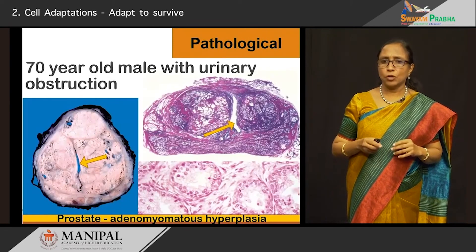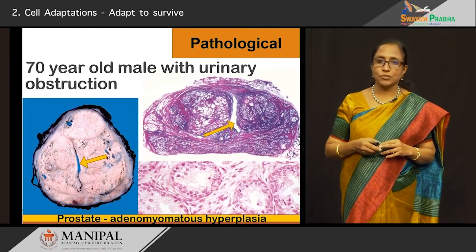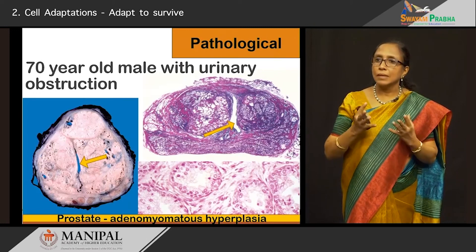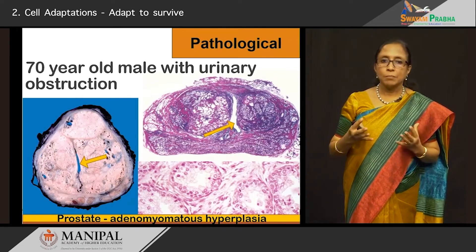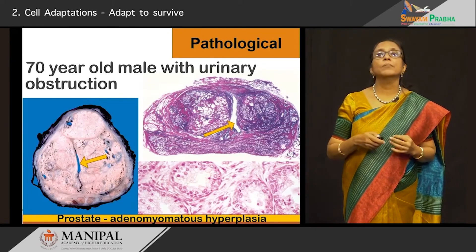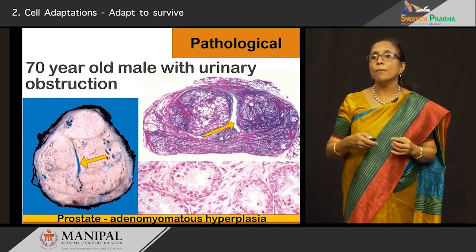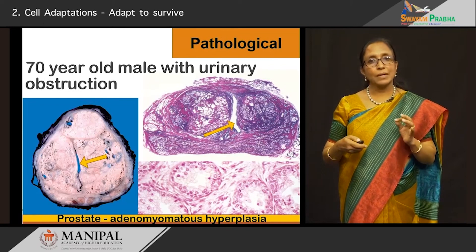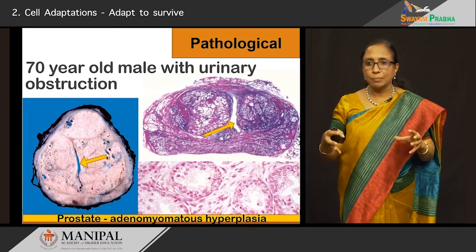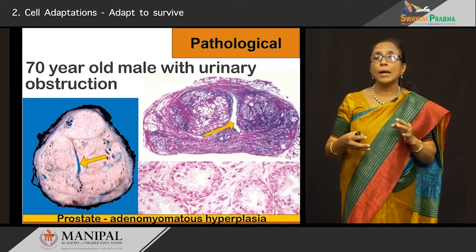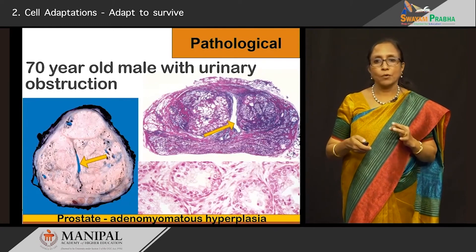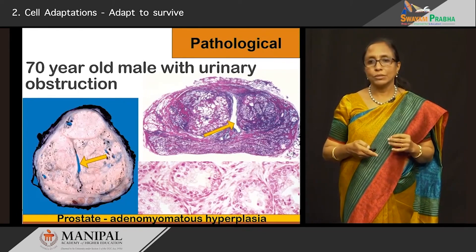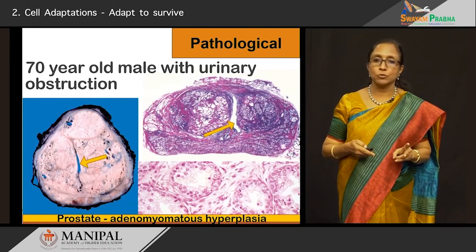Another example — a pathological condition: a 70-year-old male with urinary obstruction. The arrow shows the urethral orifice. The prostate, lying just below the bladder neck, is enlarged because of hyperplasia of the prostatic glands. We call it adenomyomatous hyperplasia — hyperplasia of the glands (adeno), with glands proliferating back-to-back, together with hyperplasia of the smooth muscle. Both are proliferating, giving rise to prostatic hyperplasia causing urinary obstruction seen in the older age group. This is another pathological condition where we see both hypertrophy and hyperplasia.